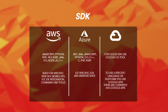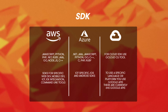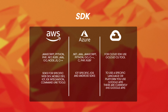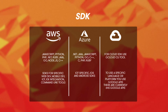GCP also provides an SDK, but it works a bit different. What Google calls the Cloud SDK is for using the GCloud CLI tool. And if you want to use a specific language or platform with GCP, then you use one of the many, many Google APIs — there are 645 of them at the time of recording.